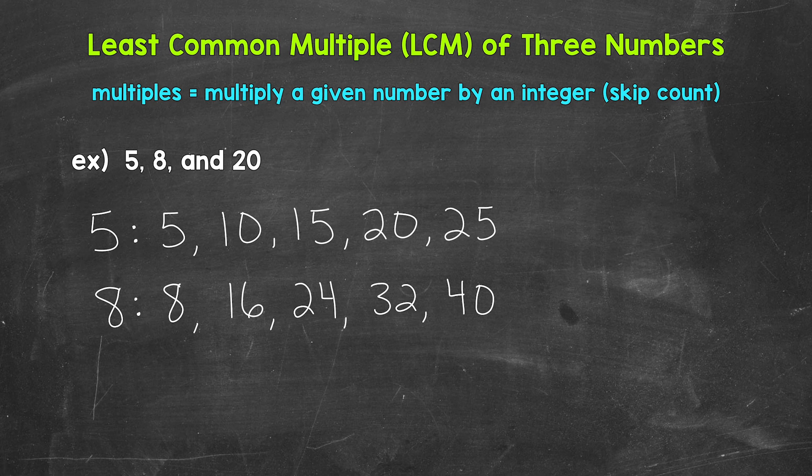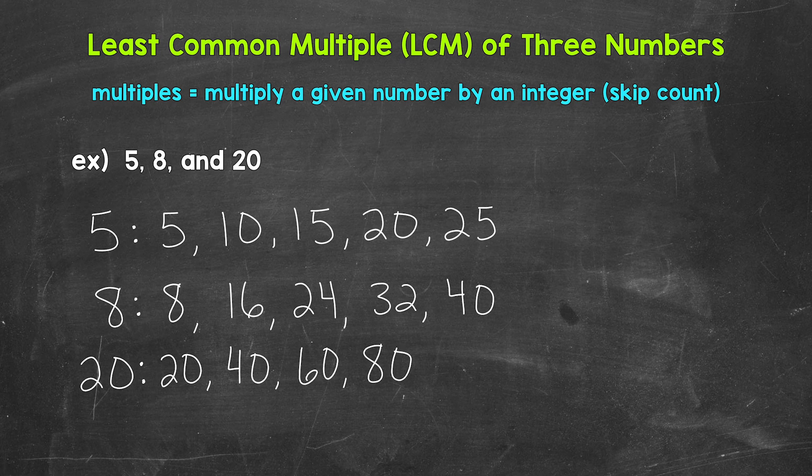And then lastly, let's list the first 5 multiples of 20. So 20 times 1 is 20, 20 times 2 is 40, 20 times 3 is 60, 20 times 4 is 80, and then 20 times 5 is 100. So 20, 40, 60, 80, 100, so on and so forth.